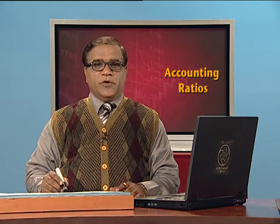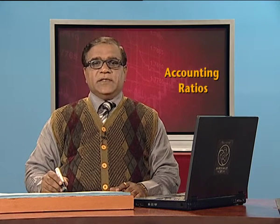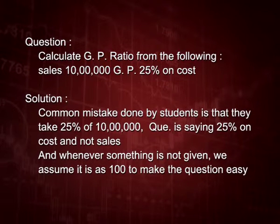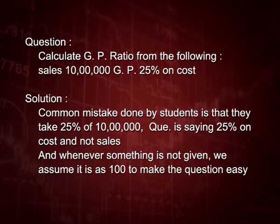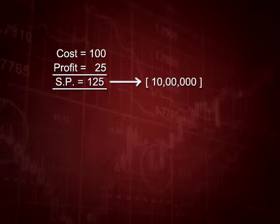Let us do some questions on profitability ratios, starting with the GP ratio. If sales are 10 lakh and gross profit is 25 percent on cost, the common mistake students make is taking 25 percent of 10 lakh. But the question says 25 percent on cost, not on sales. Whenever a value is not given, we assume it as 100. So, taking cost as 100, profit will be 25, making the selling price 125.